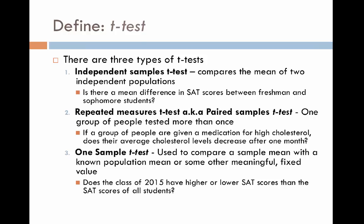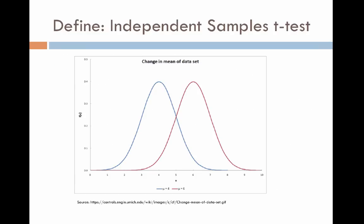Today we're going to focus specifically on the independent samples t-test. As a visual representation, we're looking at comparing two means — two averages for two populations. What we see here is a distribution of two populations. The peak is our average for the population in red, and the peak here is our average for the population in blue. The independent samples t-test tells us: is this gap between the two averages, between the two means, significant? Is the group in red actually significantly greater than the group in blue?